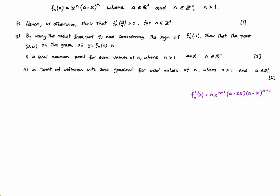This is part G. I've kept part F because it says: using part F and considering the sign of f'(-1), show that the point (0,0) on the graph of y = f(x) is a local minimum point for even values of n, and a point of inflection with zero gradient for odd values of n. This question is not straightforward — it's hard to get your head around.